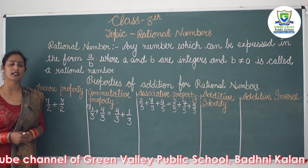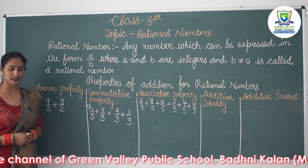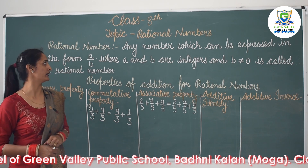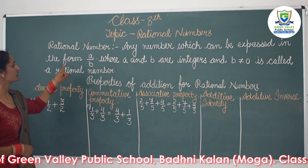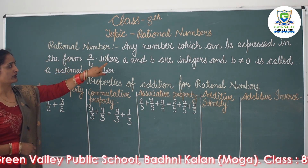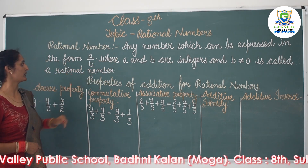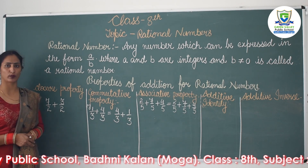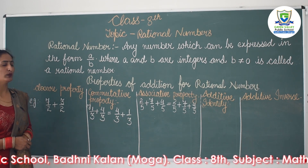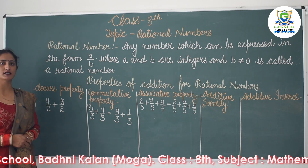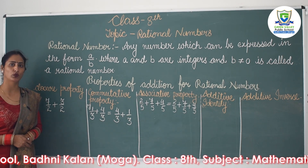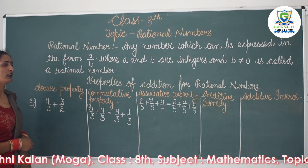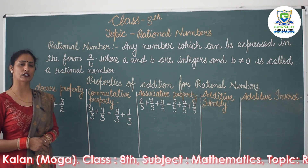Before starting the properties, you must know what is a rational number. Any number which can be expressed in the form a over b, where a and b are integers and b is not equal to 0, is called a rational number.